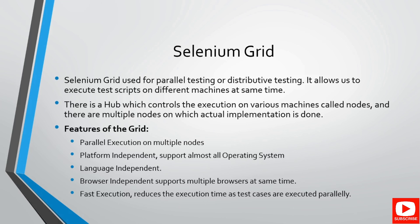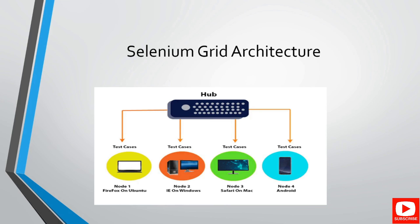Selenium Grid follows a hub and node concept where the hub is the central system and nodes are on different machines. Test cases are executed parallelly on different machines, which reduces the time compared to executing them one by one in sequence. In the Selenium Grid architecture, the hub is the central system with four nodes connected, each on a different platform like Ubuntu, Windows, or Mac. The hub sends commands to the nodes, the nodes execute the actual test cases, and responses are sent back.